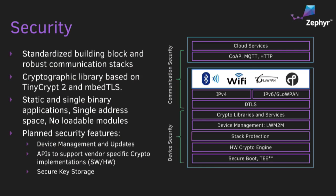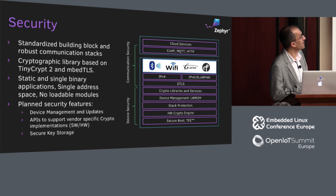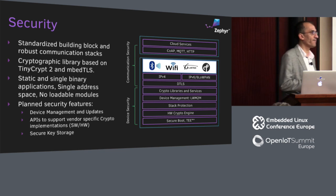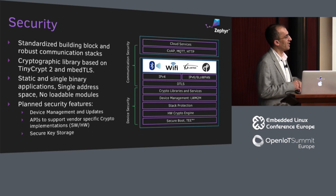In terms of security, these are the basic building blocks — the functional areas of security we have implemented in Zephyr. We have TinyCrypt, and we recently added mbedTLS to support TLS and DTLS. There is a lot of development going on to support device management APIs, to abstract the hardware crypto layers from different vendors and secure key storage. The goal is to provide APIs where it makes sense to abstract the hardware and implementation at the lowest layers. And that's where I hand over to Ben to talk about the unified kernel.